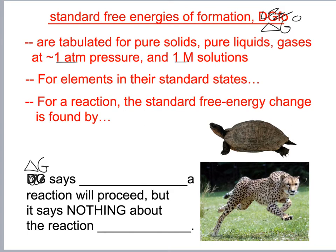For elements in their standard states, delta G naught of formation is zero. For a reaction, the standard free energy change is found using the same approach.